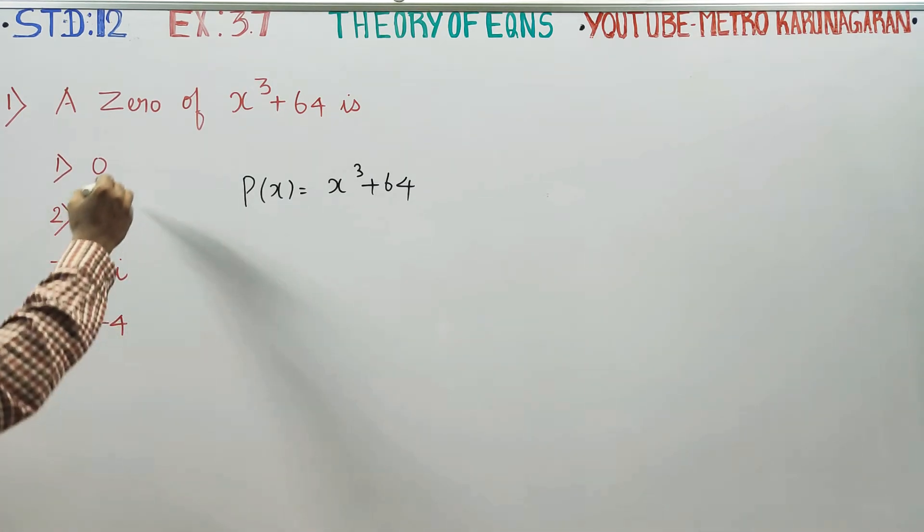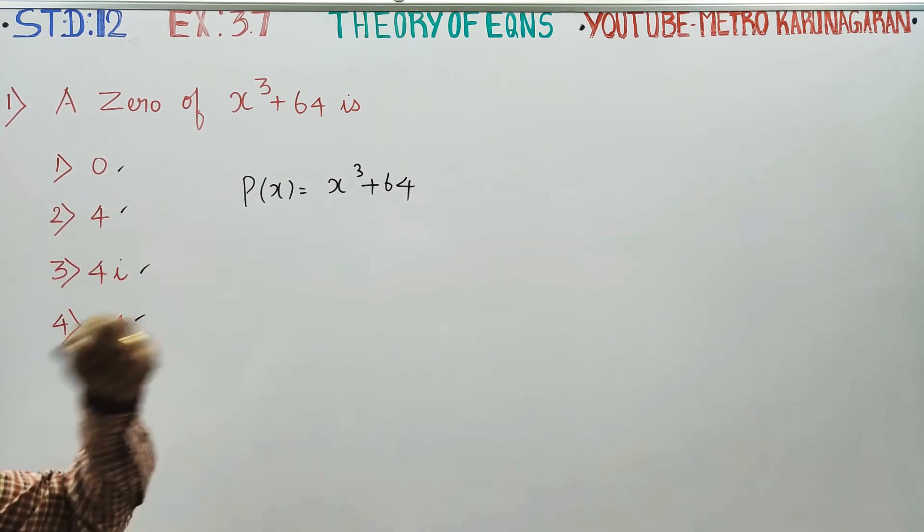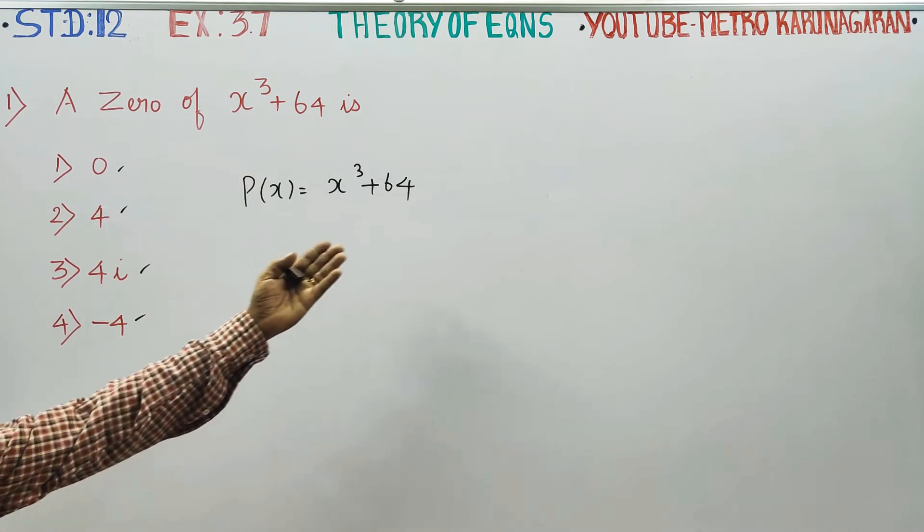The options are: 0, 4, 4i, and -4. You just substitute any values. Which one satisfies?